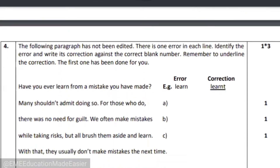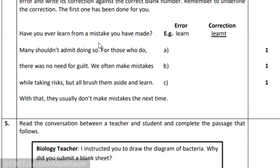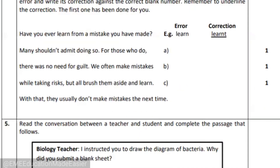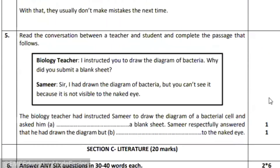Coming to grammar — grammar has become more simple. A three-marker editing exercise will be there. If you do not know how to edit, you can click on the URL showcased above, as it is a very effective video on editing that will help you understand how to edit a passage. Here we have a passage that has to be edited for just three marks. Moving down, we have a conversation — it is reported speech basically. You read the dialogue given and then convert it into indirect speech and fill in the paragraph. The rules have to be followed strictly.